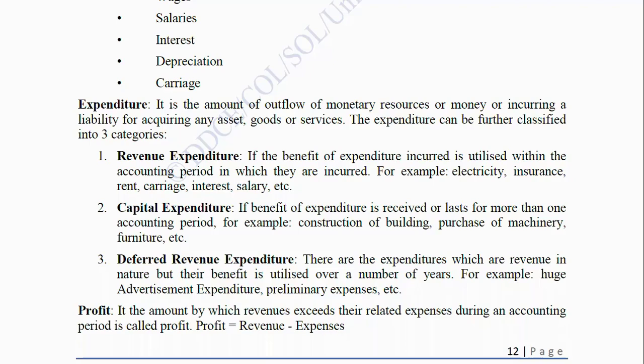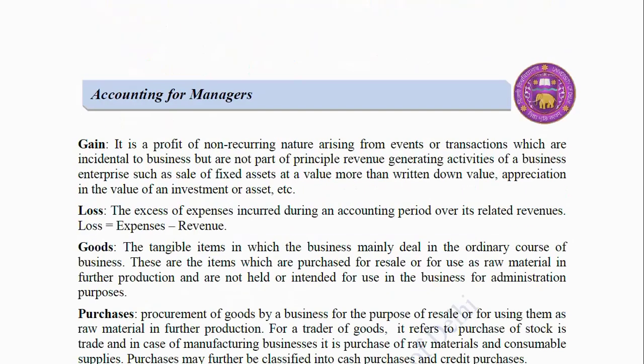Profit: It is the amount by which revenues exceed their related expenses during an accounting period. Profit = Revenue minus Expenses. Gain: It is a profit of non-recurring nature arising from events or transactions which are incidental to business but are not part of the principal revenue-generating activities, such as sale of fixed assets at a value more than the written-down value, or appreciation in the value of an investment or an asset.